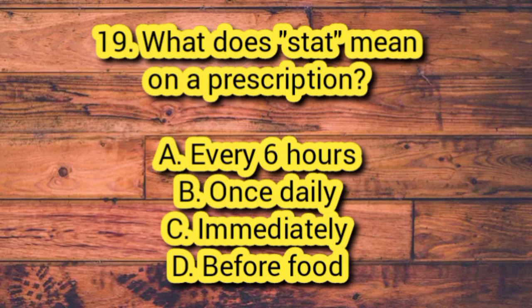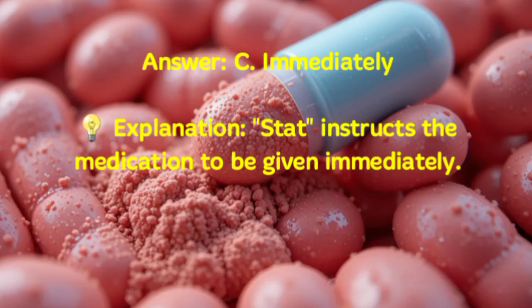Number 19. What does STAT mean on a prescription? A. Every 6 hours. B. Once daily. C. Immediately. D. Before food. Answer: C. Immediately. Explanation: STAT instructs the medication to be given immediately.